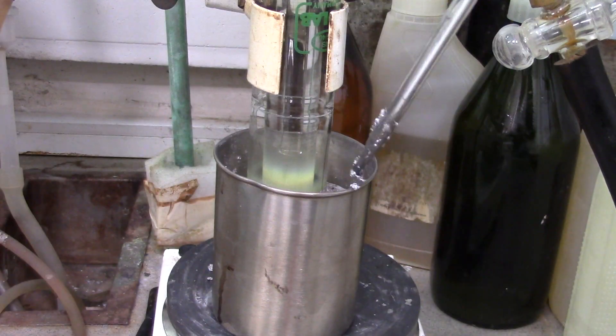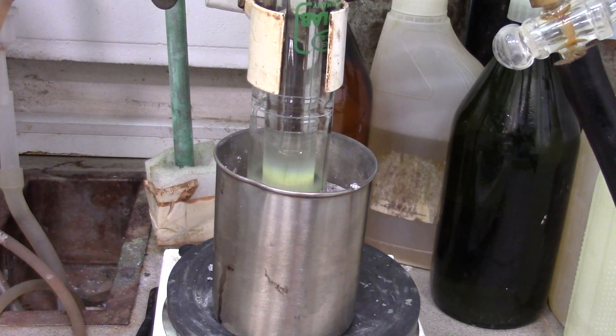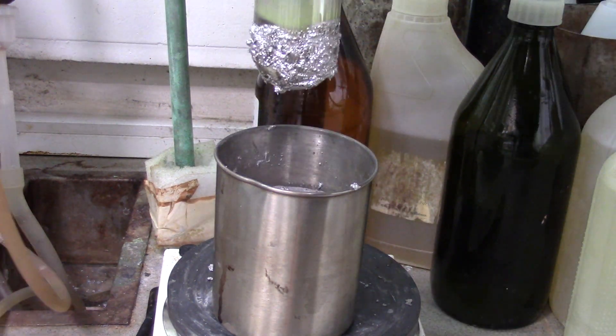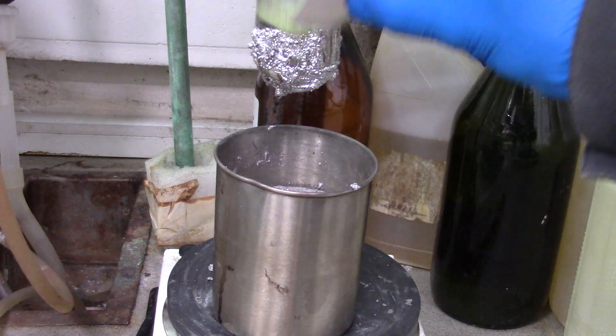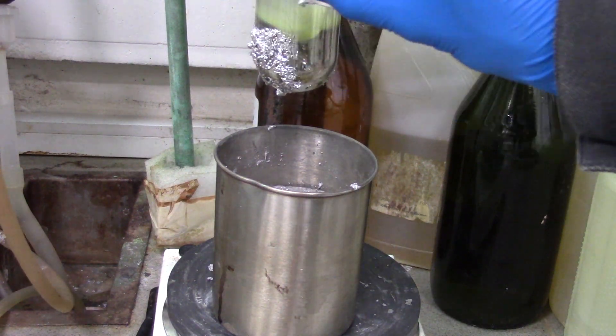After sublimation process is gone, remove the thermometer and put off a sublimator from bath and let it cool down. Further, remove whole wood alloy from it. I will use an used aluminum foil sheet.